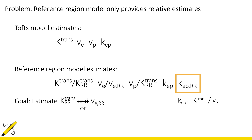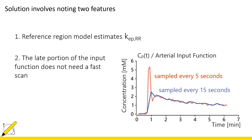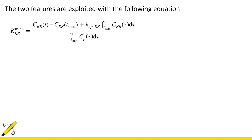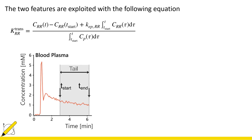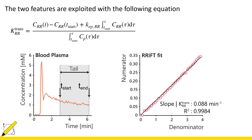Our solution relies on noting two features. The first is that the reference region model already estimates K-ep for the reference region. The second is that the late portion of the input function does not require a fast scan. These two features are used with an equation derived in the paper: the numerator requires the concentration in the reference region along with K-ep of the reference region, while the denominator requires knowledge of the input function tail — the stable part. If we plot the numerator and denominator for different values of t, the points fall along a line and the slope is an estimate of K-trans for the reference region.